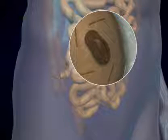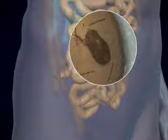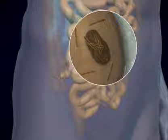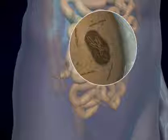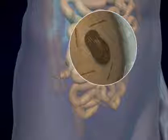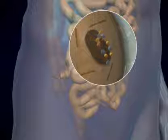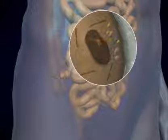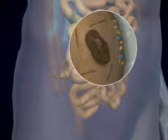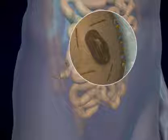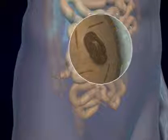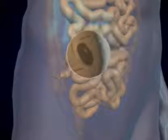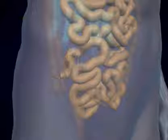The large intestine contains bacteria which is responsible for the synthesis of vitamin K and certain B-complex vitamins. It absorbs water and electrolytes from the undigested food and serves as a temporary storage site for waste. It also expels feces from the body, a process known as defecation.